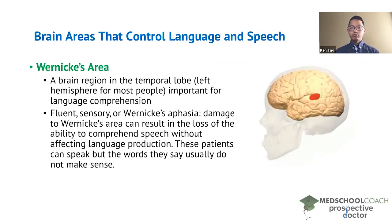Next we have Wernicke's area. As you can see in this diagram, Wernicke's area is a brain region in the temporal lobe, and similar to Broca's area, it is on the left hemisphere for most people. Wernicke's area is important for language comprehension, and damage to this area can result in what is called fluent sensory, or Wernicke's aphasia.